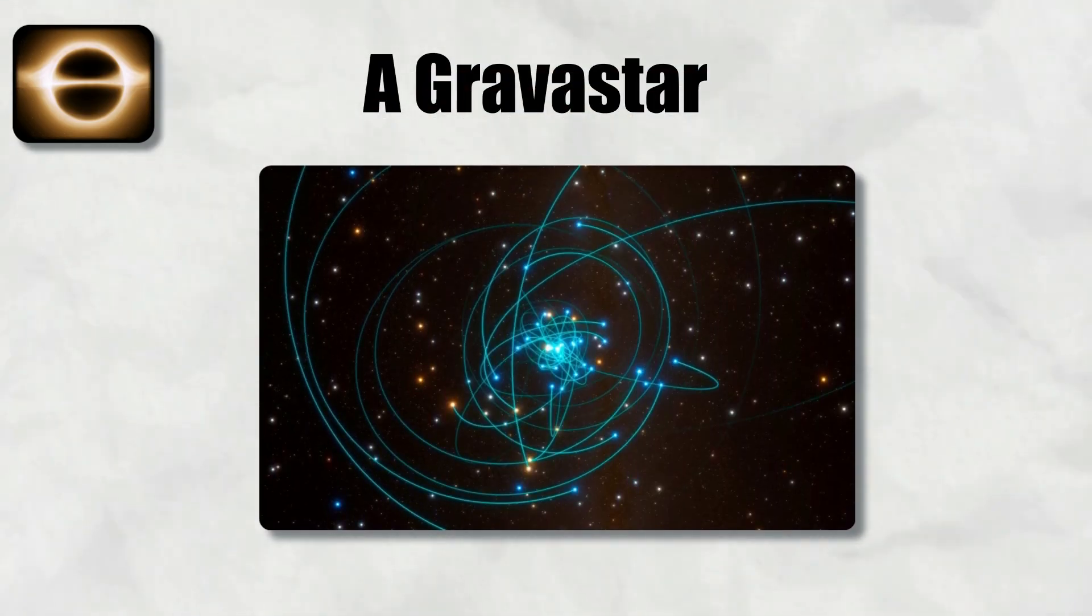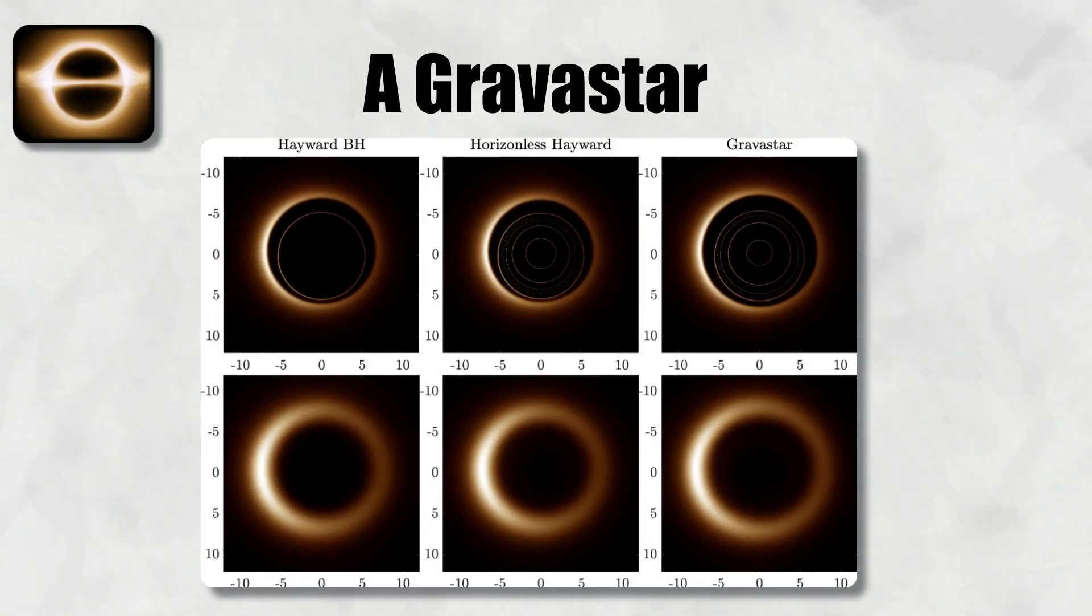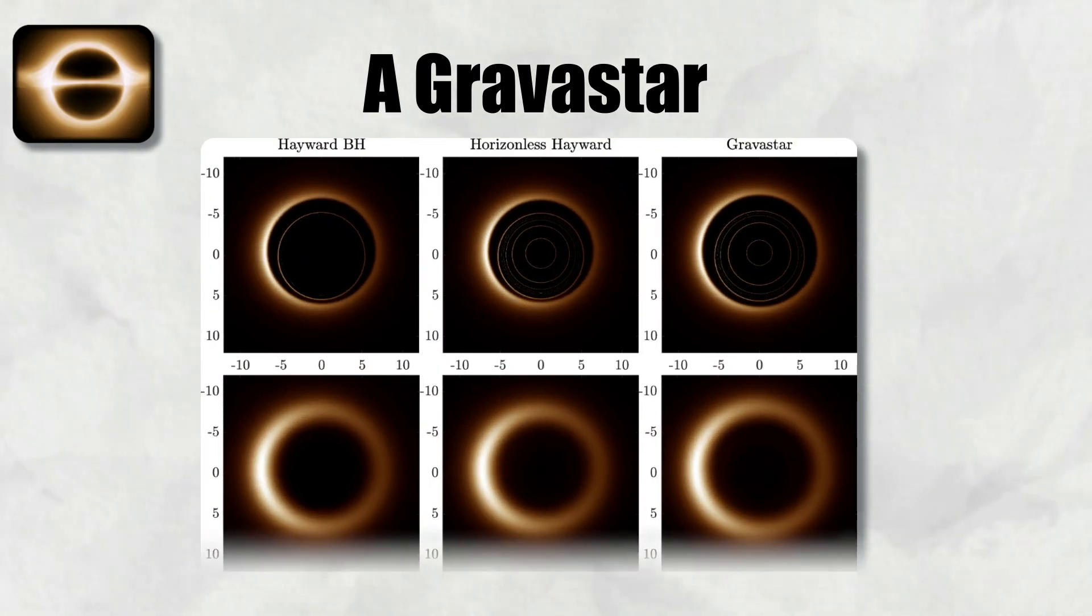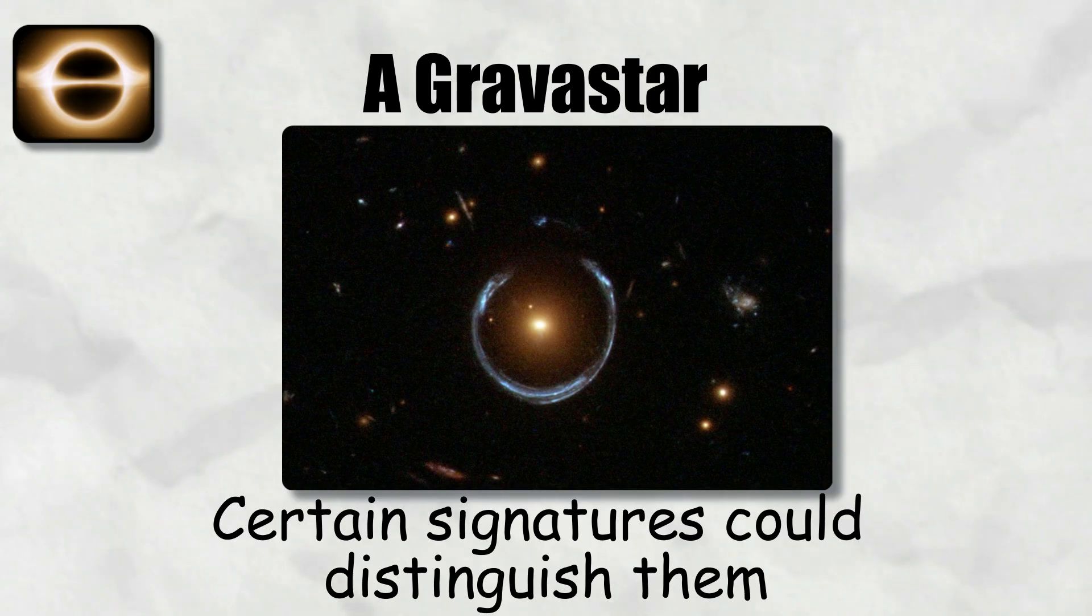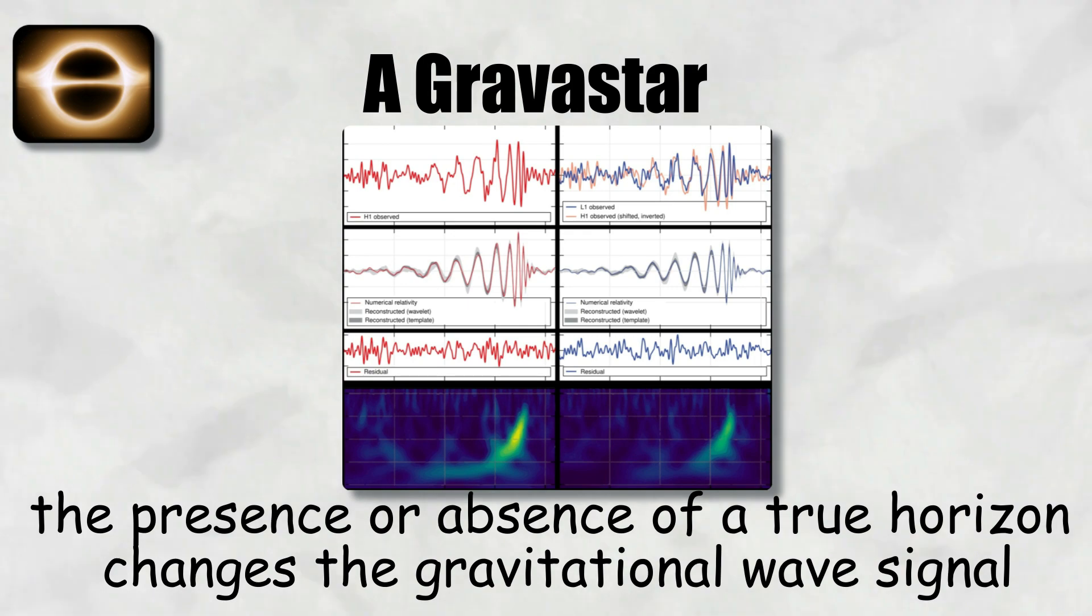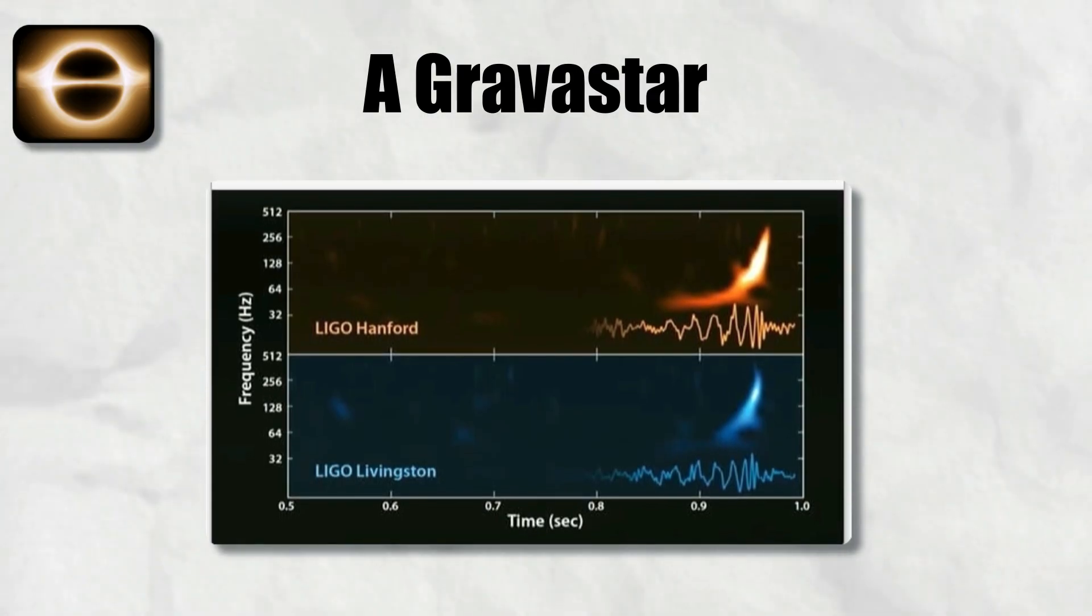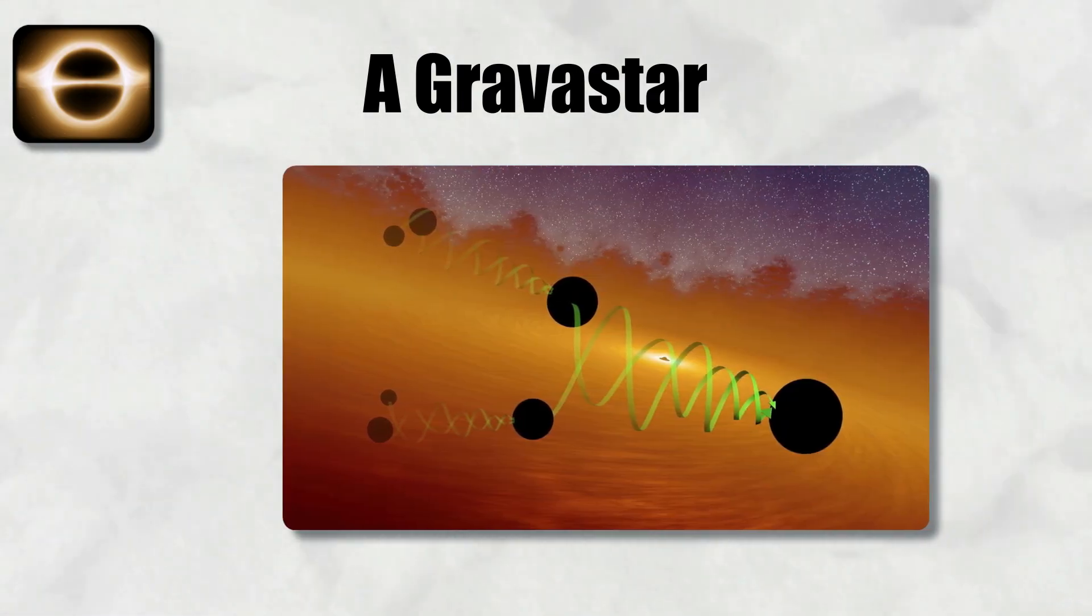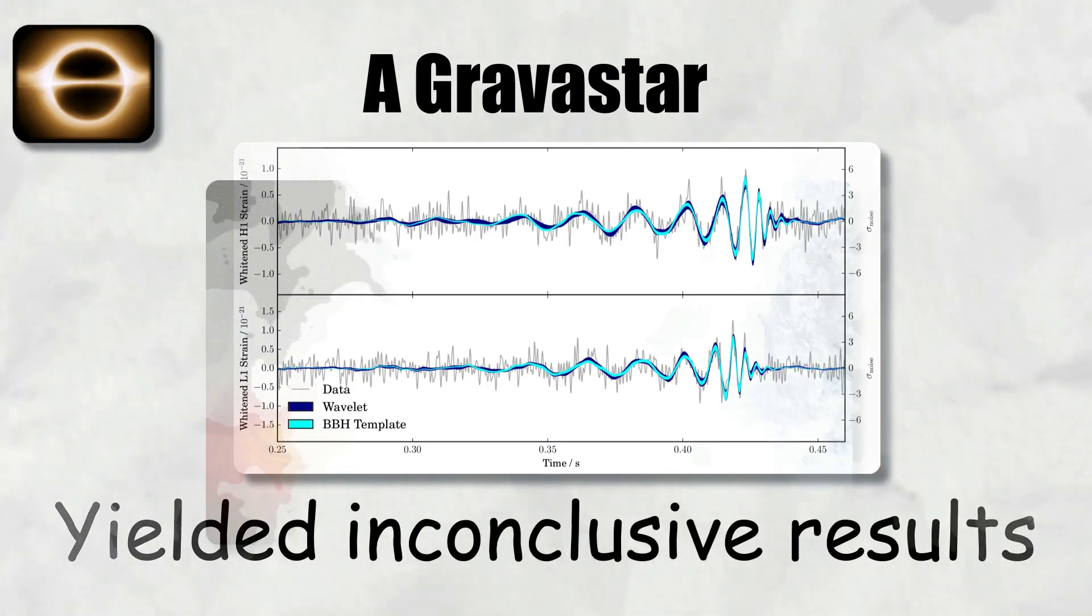Instead, signals can be delayed by large gravitational redshifts but eventually can escape. From the outside, a gravastar can mimic many of the observational features of a black hole: compactness, strong gravitational lensing, and high redshift emission. However, certain signatures could distinguish them. For example, when two compact objects merge, the presence or absence of a true horizon changes the gravitational wave signal. A gravastar's hard surface could produce echoes, reflected waves that arrive after the main merger signal. Detecting such echoes is extremely difficult, and current searches in LIGO-Virgo data have yielded inconclusive results.